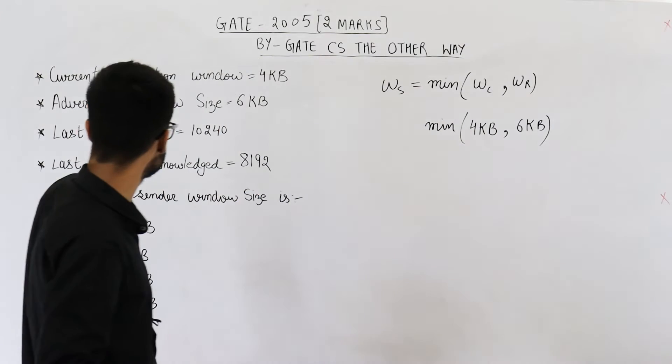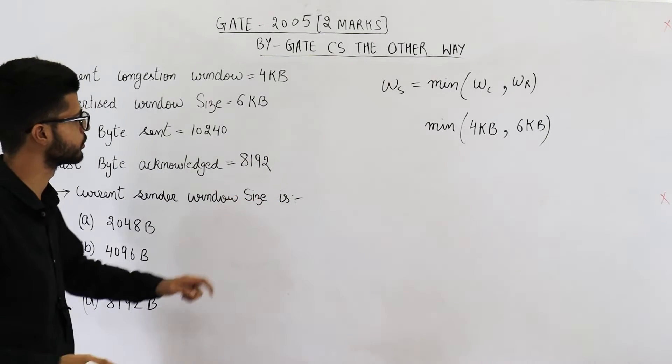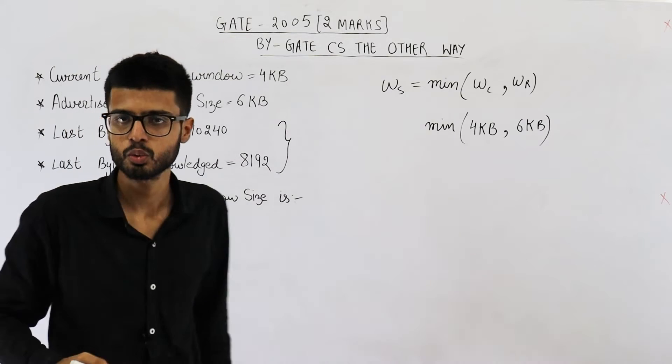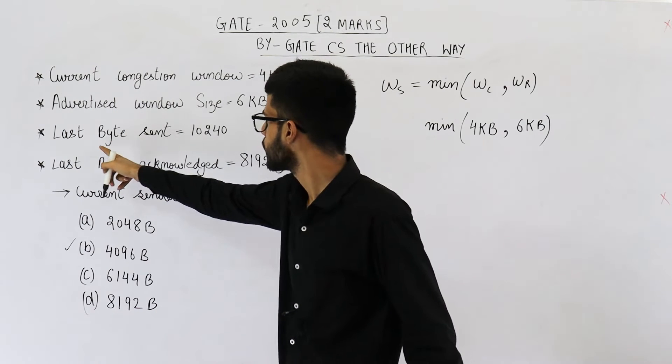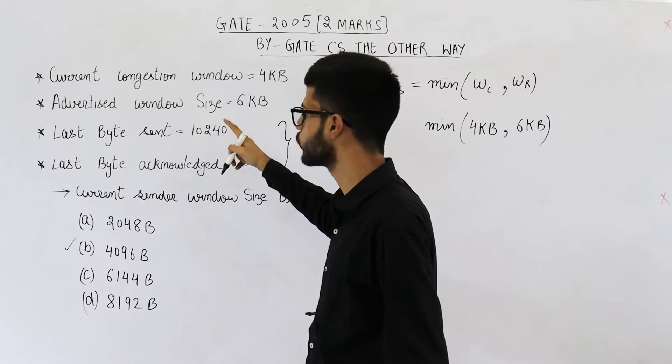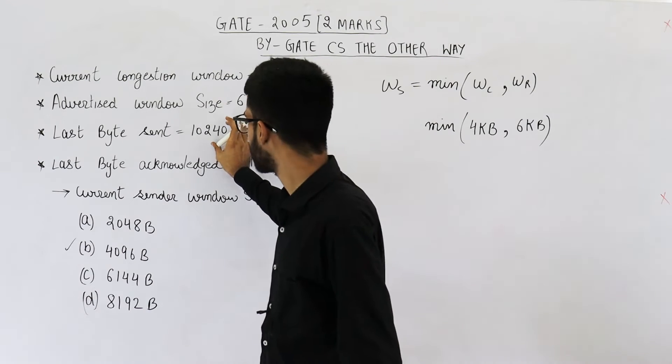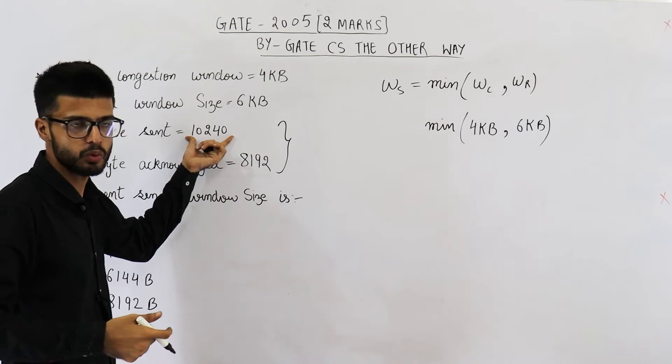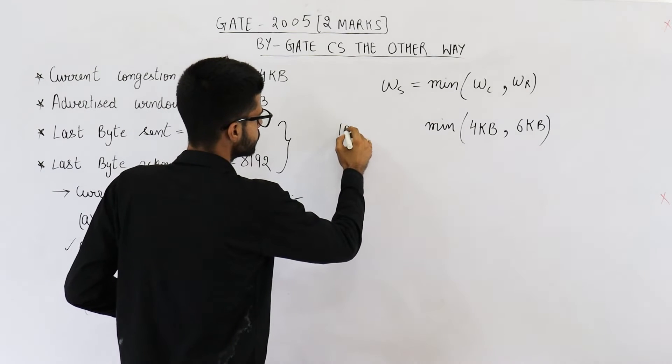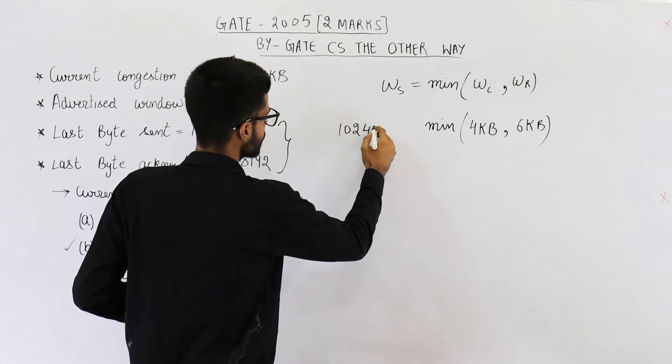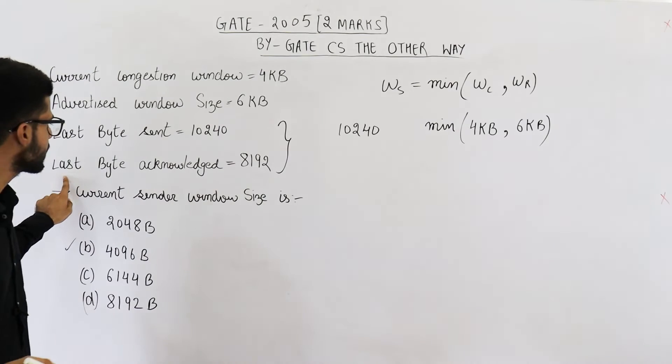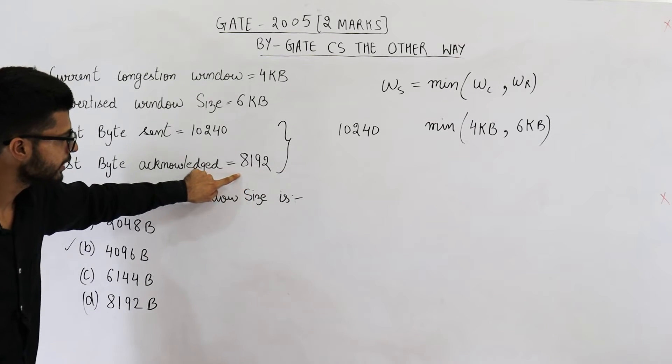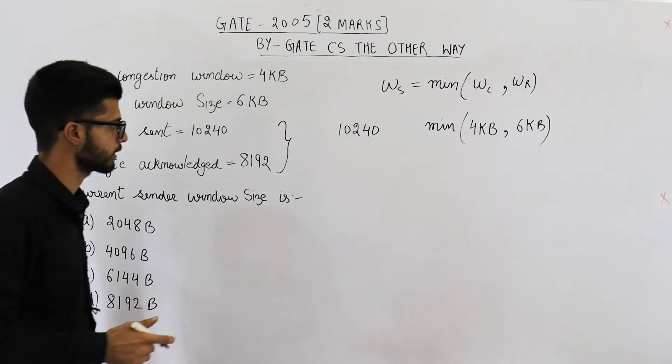Now they have given you this information just to confuse you. This is not actually useful for solving this question. They are saying last byte sent is 10240. So these many bytes are sent till now. The number of last byte is 10240. And the acknowledgement is received for this byte. So till this byte number, all the bytes are acknowledged.